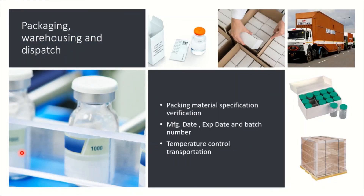Packing is an important phase of manufacturing. As per the batch packing record, materials are issued from the warehouse and packaging begins. Key factors are verifying manufacturing date, expiry date, and batch number at every stage of packing — whether secondary, tertiary, or labeling — ensuring all are interconnected and traceable for any future product recall. Transportation is done under temperature-controlled conditions based on product requirements.